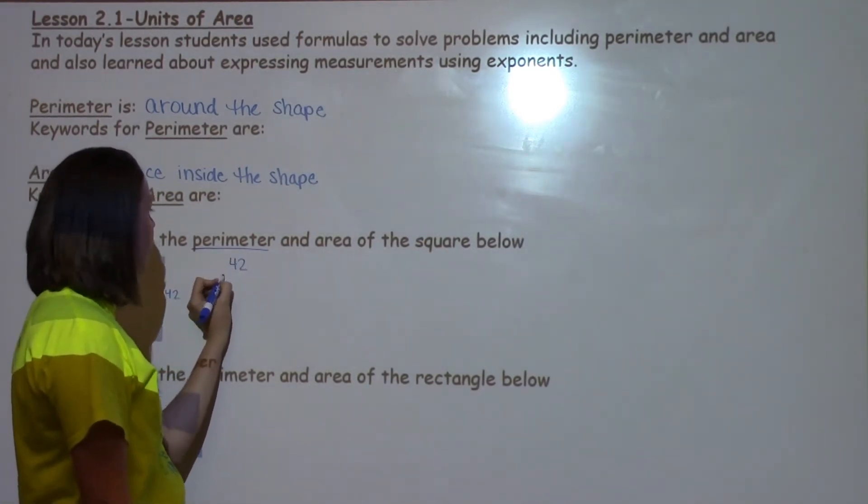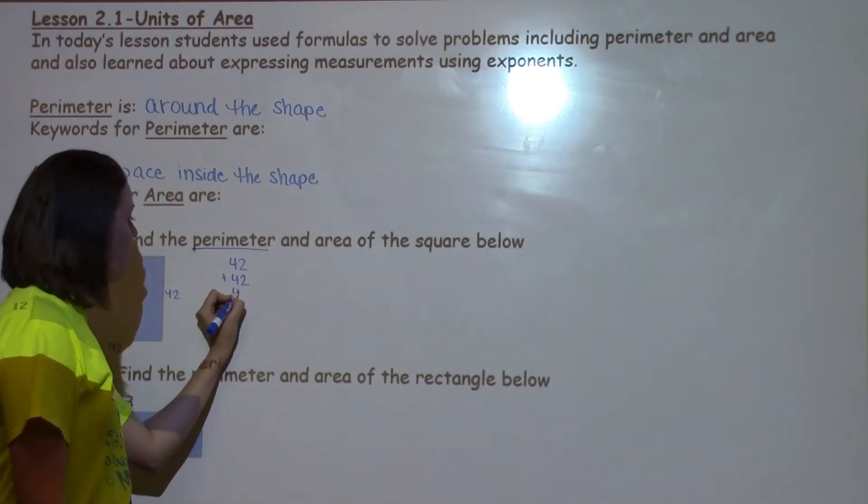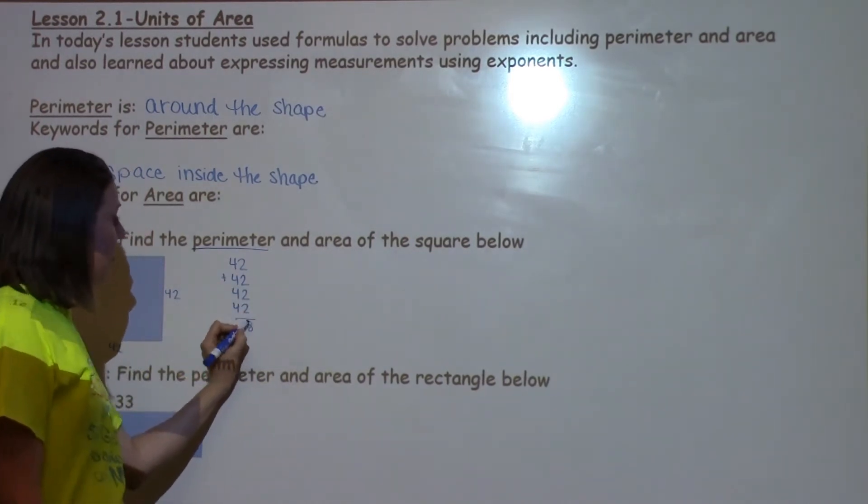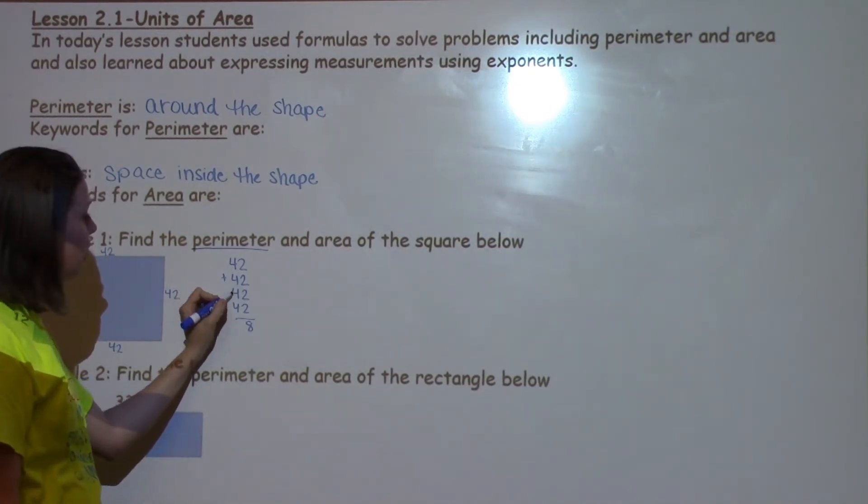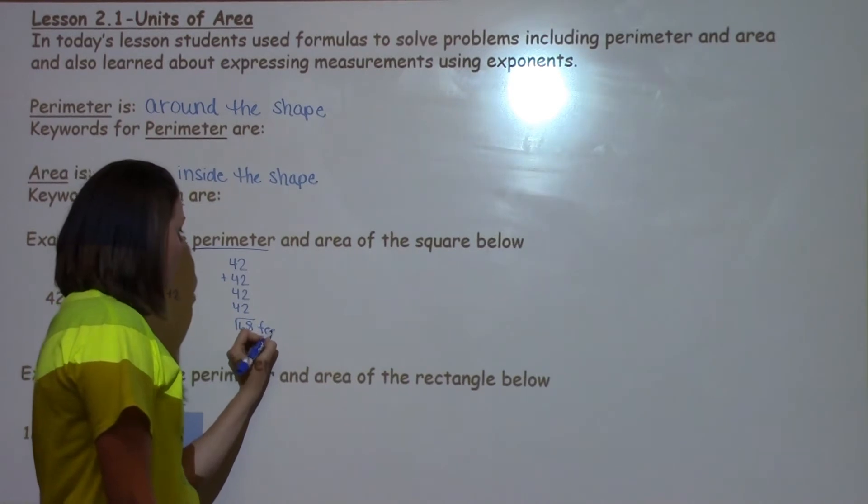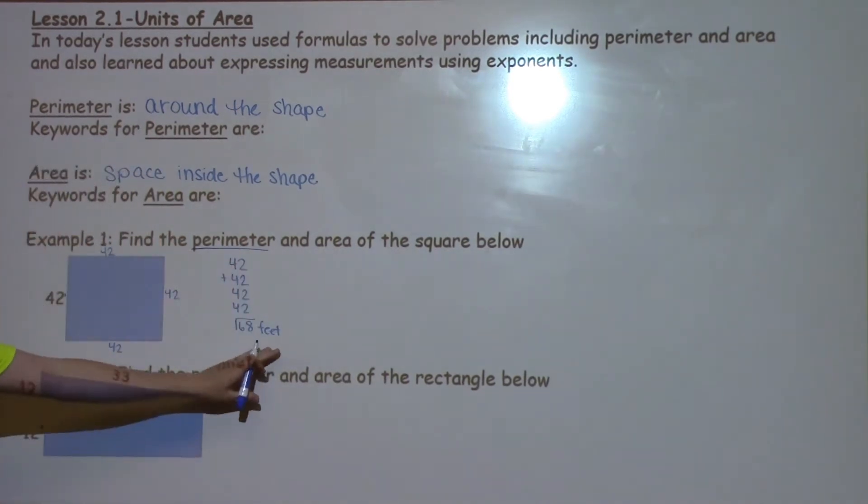So when I add all these up, I'm going to take 42 plus 42 plus 42 plus 42. Notice that my answer for perimeter is just in feet.